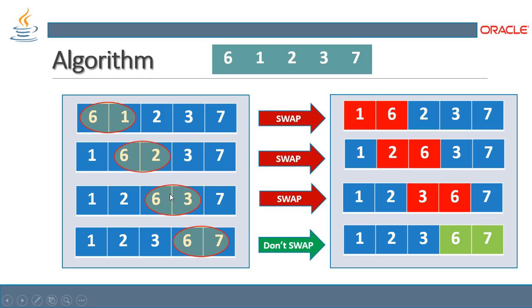The bubble moves to the next position and compares six and three. Again the condition is not true, so it swaps again. The algorithm continues comparing and swapping as the bubble moves forward. When it reaches six and seven, the condition is true — they are in the correct order — so no swap occurs, shown as a green block. This completes the first cycle. Sometimes the list is sorted after one cycle; otherwise the algorithm retreats and checks again.